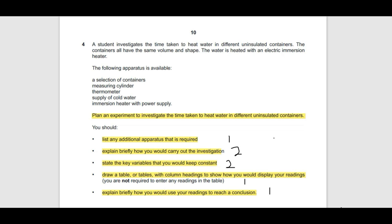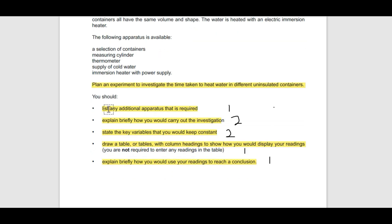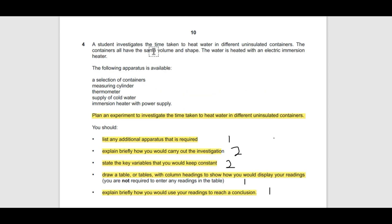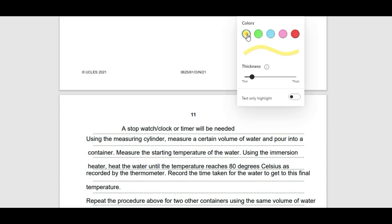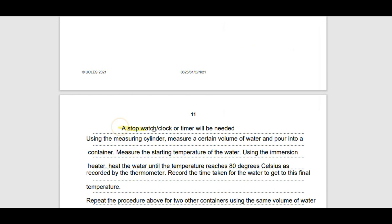Now, let's answer the questions. List any additional apparatus that is required. In this experiment, the student is to investigate the time taken, but there is nothing like time measurement in the given apparatus. We have a selection of containers, measuring cylinder, thermometer, supply of cold water, and immersion heater. What we use to measure time — we actually need a stopwatch, or stopclock, or timer. So a stopwatch will be required. This gives you 1 mark.